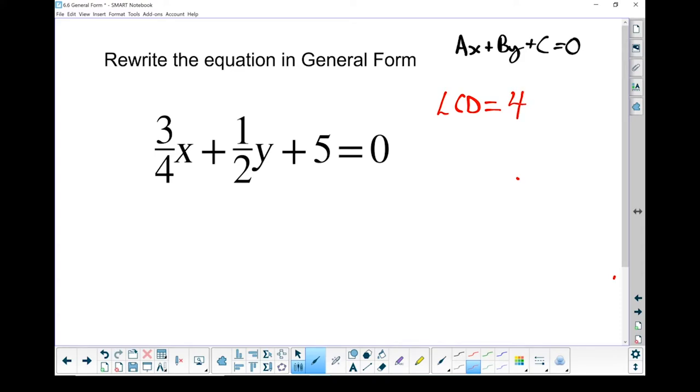Next step, I'm going to take each one of these terms, and I'm going to times it by four. Times that by four. I'm also going to times this zero by four as well. All right, so let's go through that. If I look at this three quarters x, if I times it by four, times by four and dividing by four, they cancel each other out.